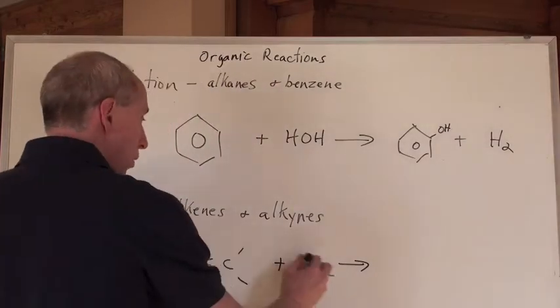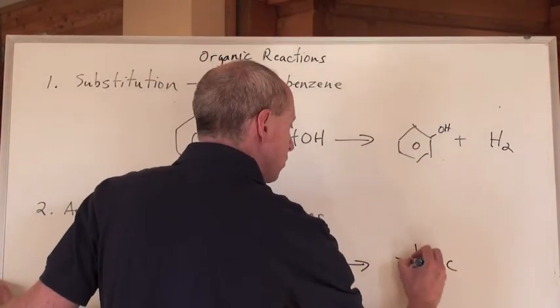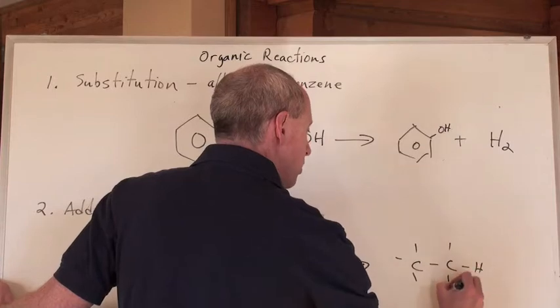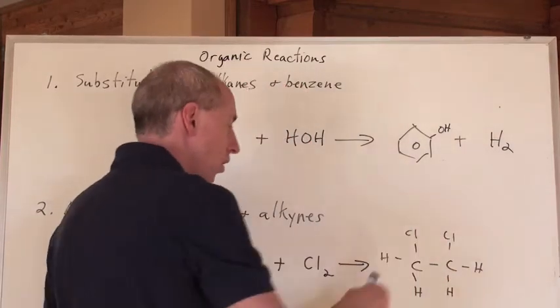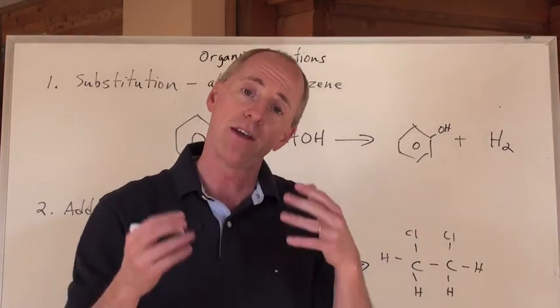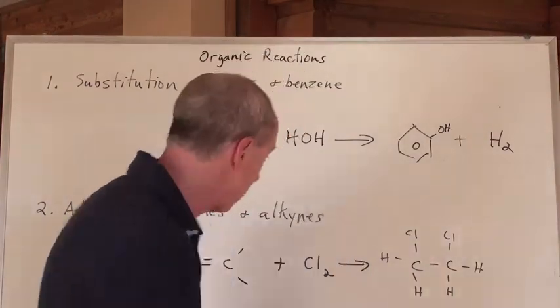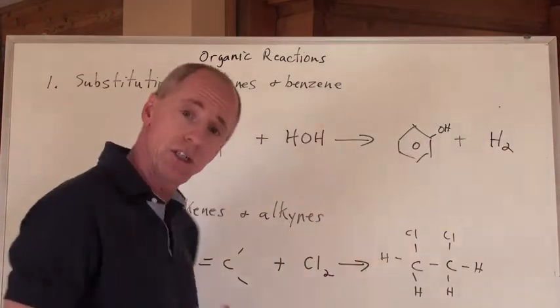So what you do when you write it out, you have to show that the double bond is broken, that you've got now hydrogens all around here, but you've got a chlorine here and a chlorine here, and you would call that 1,2-dichloroethane. Now, if you had a triple bond, by the way, that's balanced, and that's a balanced reaction too, that's balanced.